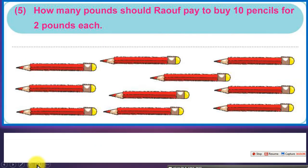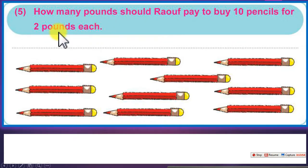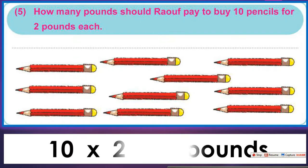How many pounds should I pay to buy 10 pencils at 2 pounds each? The price of each pencil is 2 pounds, and there are 10 pencils, so 10 times 2 equals 20. The amount paid equals 20 pounds.